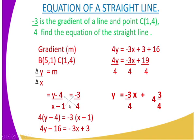After cross-multiplying you get: 4(y minus 4) equals negative 3(x minus 1), which expands to 4y minus 16 equals negative 3x plus 3. Shifting 16 to the right-hand side gives 4y equals negative 3x plus 19. Dividing each term by 4 to get the form y = mx + c, the equation becomes y equals negative three-quarters x plus four and three-quarters.